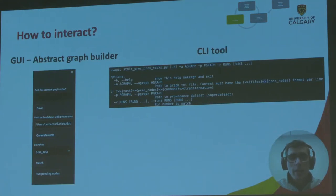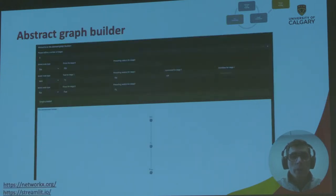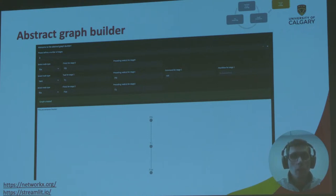We can interact with the application in a couple of ways. There is a graphical interface that would probably be welcomed by users who dislike the command line. There is also a command line interface for scheduling jobs that takes the concrete and abstract graphs as inputs. It also takes a run, which is the name of an orphan branch, as an additional input. The abstract graph building panel is shown here. This tool was built using Streamlit. The abstract and concrete graphs are built using NetworkX. Every stage or level in the graph corresponds to a task or file that can be created using the interface or imported from abstract graph files. The connections between nodes are made by defining the relationship between nodes and their preceding and succeeding nodes.